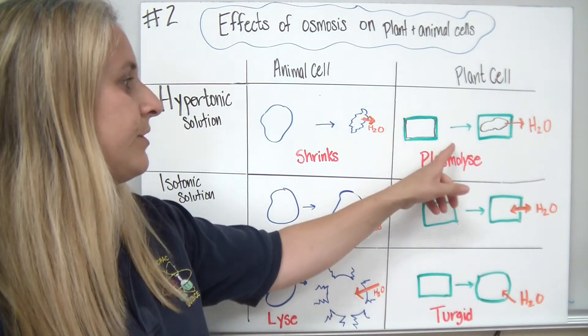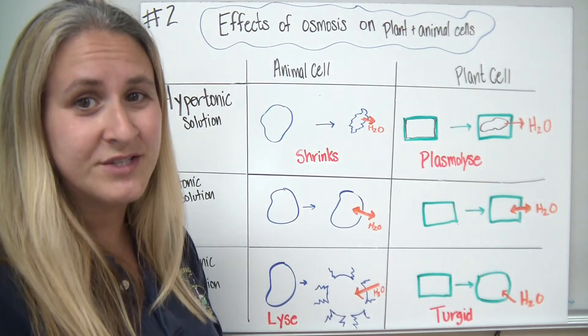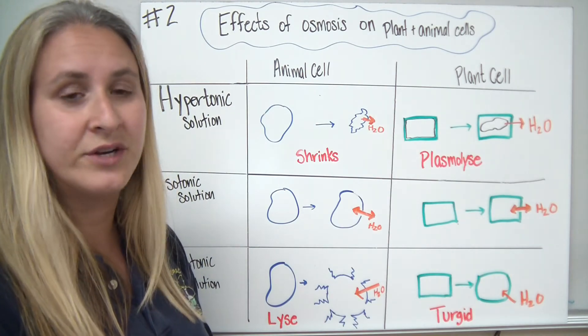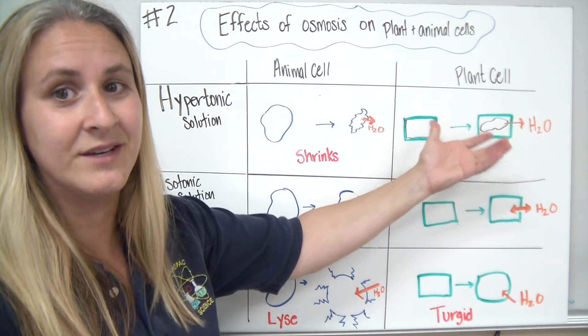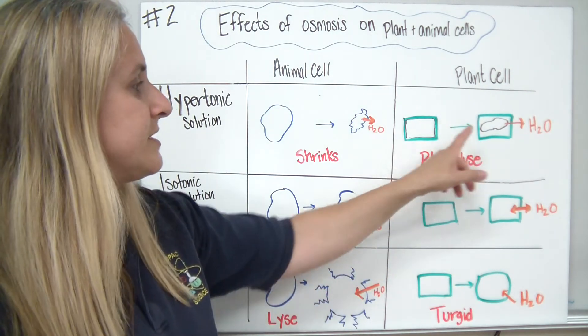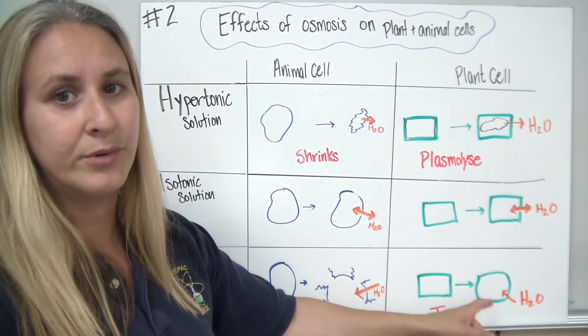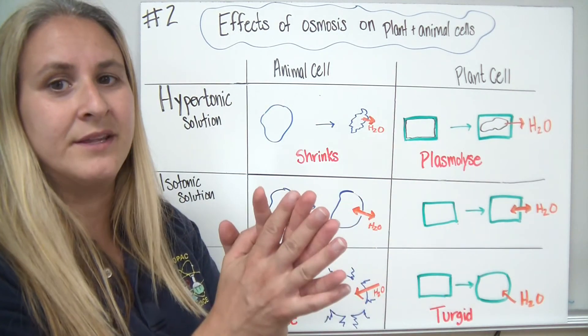So think about a plant that has lost water. Maybe you forgot to water it. It's been outside on a very dry day. If that plant cell, all of the plant cells in a plant have lost too much water, those cells have less turgor pressure and they can collapse on themselves.